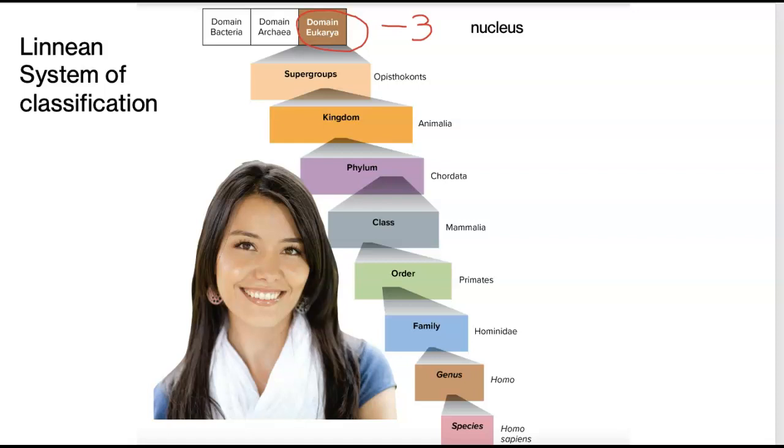Weird group, but this is where the animals would be placed under this particular supergroup. The next group underneath. Now that you know you're an animal, the next group underneath, or the next category, is the kingdom level.